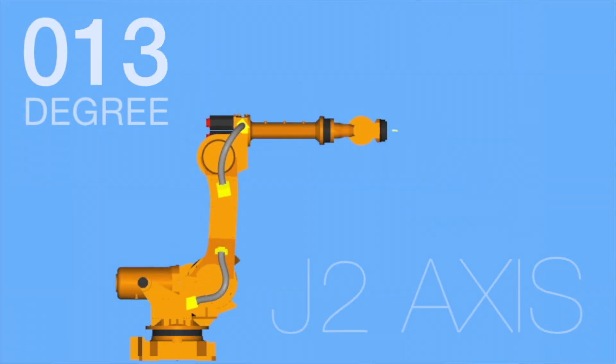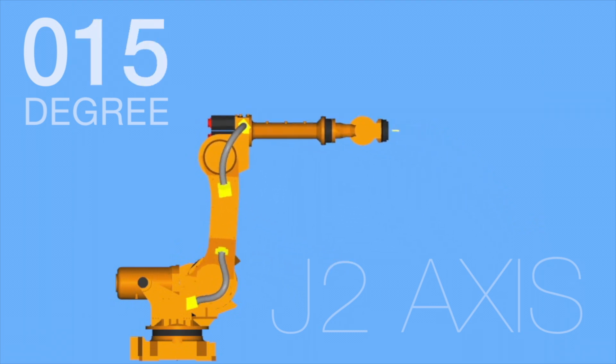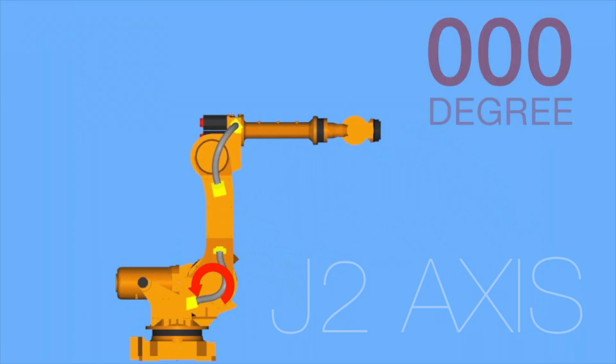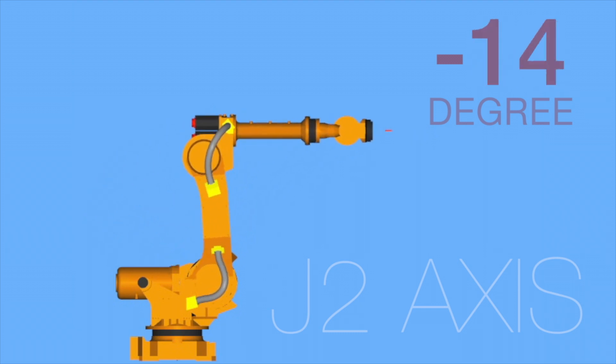Axis 2: This axis allows the lower arm of the robot to extend forward and backward. It is the axis powering the movement of the entire lower arm. This axis is also known as the Motoman J2.